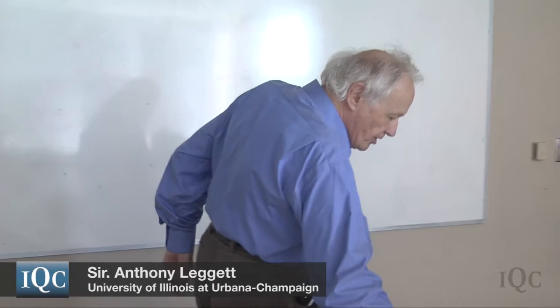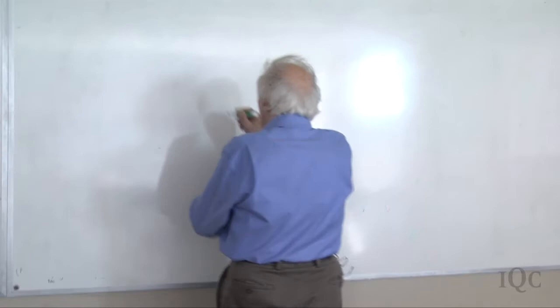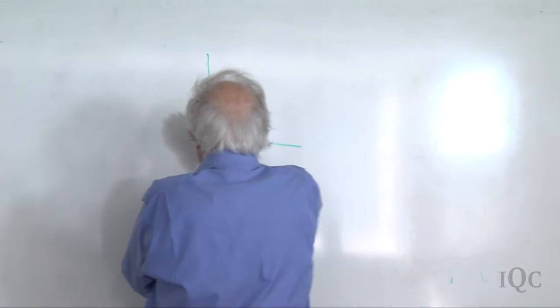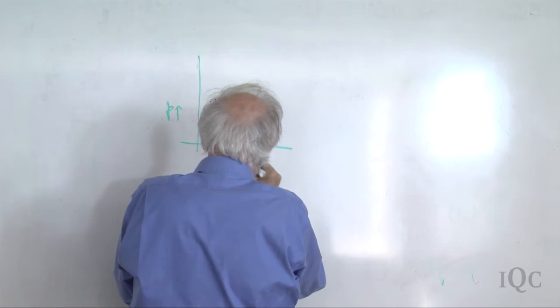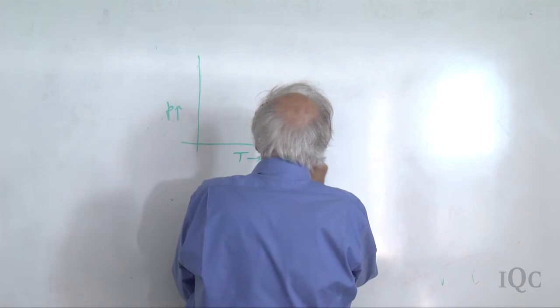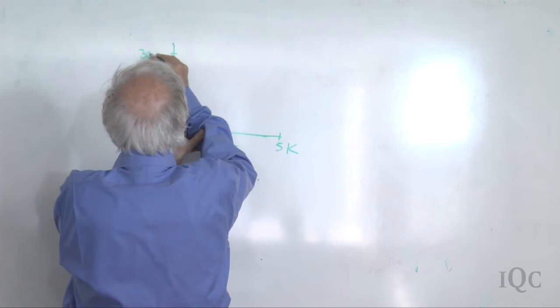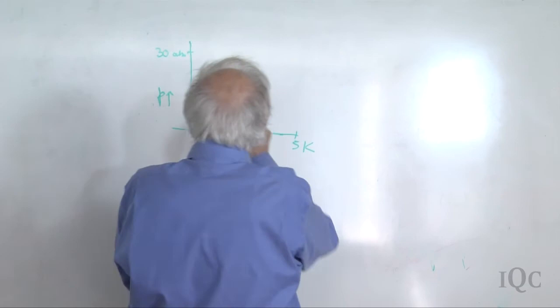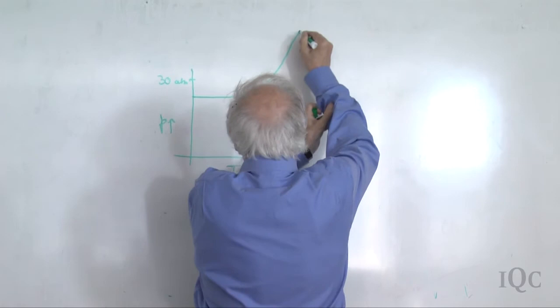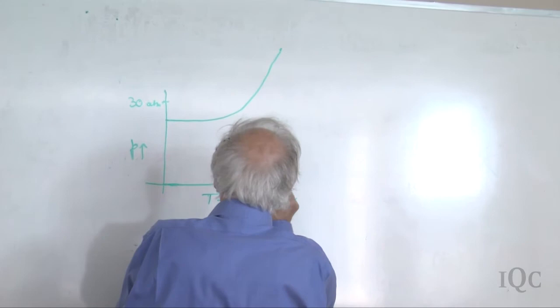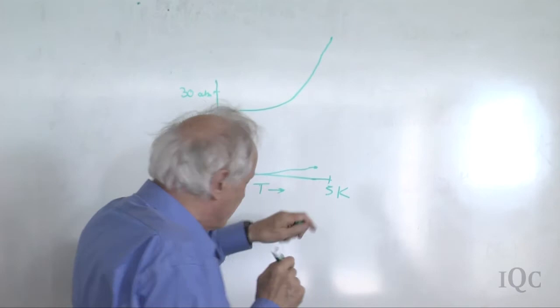Let me start by reminding you of the helium-4 phase diagram. We have pressure up this axis and temperature along this axis, with roughly 5K somewhere here and 30 atmospheres up here. At high pressures you get the solid, and at low temperatures and low pressures you get the liquid and gas, with a critical point.